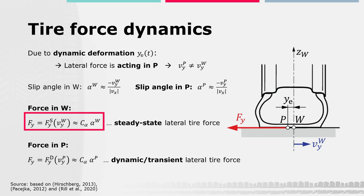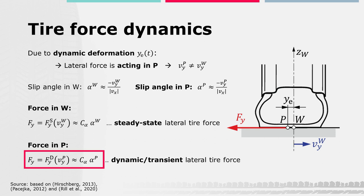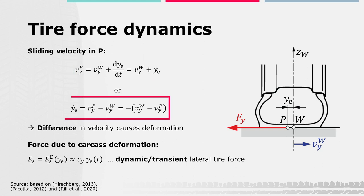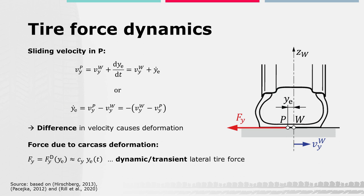However, the resulting lateral force actually acting in P due to the deformation is a function of the slip angle in P, which is determined by the lateral sliding velocity of P. The resulting lateral force is named the dynamic or transient tire force Fy,D, because it is linked to and depends on the dynamic deformation ye. We can see this by looking at the lateral velocity of point P: it is determined by the lateral velocity of W plus the deformation rate, described by the derivative of the deflection ye with respect to time. By rearranging, we can see that the difference between the sliding velocities of the two points P and W causes the tire to deflect.